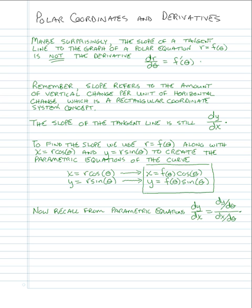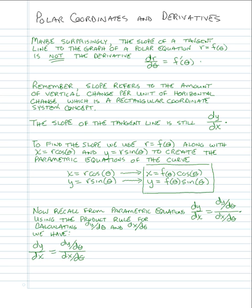From parametric equations, to find dy/dx when x and y are defined parametrically, we take the derivative of y with respect to the parameter θ, divided by the derivative of x with respect to the same parameter θ. So all we need to calculate is dy/dθ and dx/dθ. We'll have to use the product rule, since dy/dx is a quotient of those derivatives.